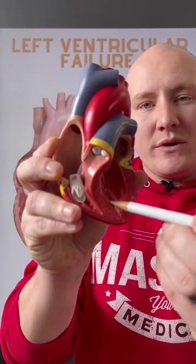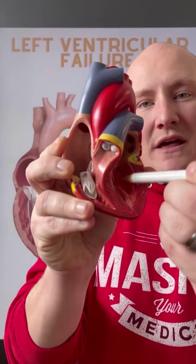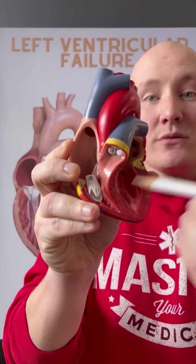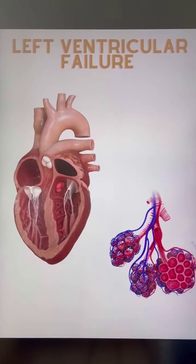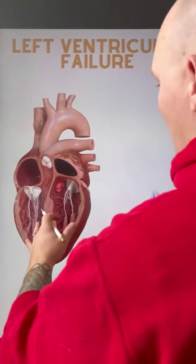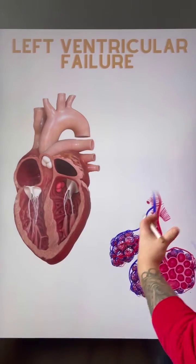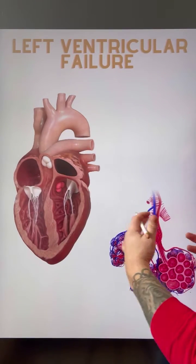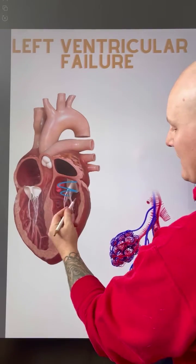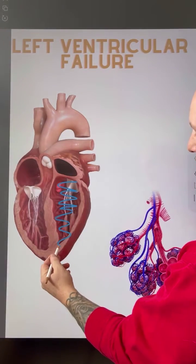Why does pulmonary edema occur when we have left-sided failure, left ventricular failure? Well, let me show you. It's all due to the fact of a pressure problem within the alveoli that's occurring because of the failure of this left ventricle.